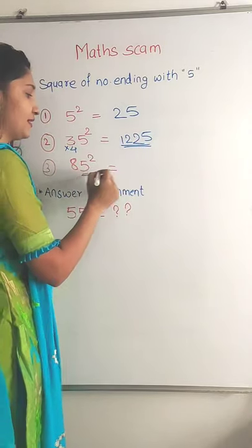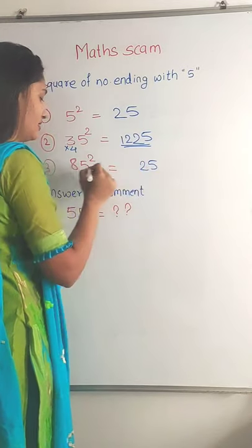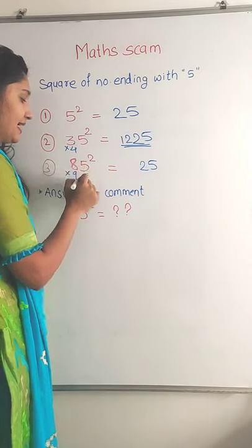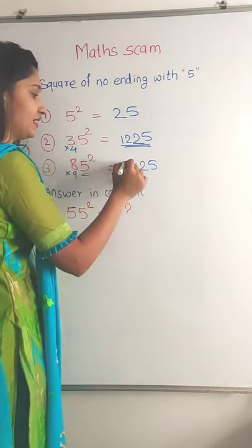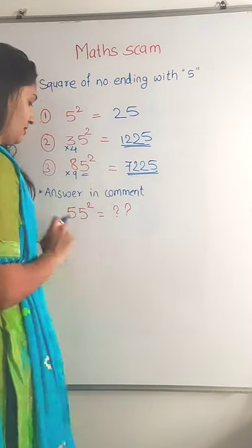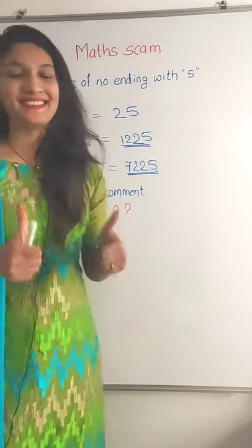Next, the square of 5 is 25. The adjacent number of 8 is 9. 9 eights are 72, so the answer is 7225. Now write the answer for 55 squared in the comments.